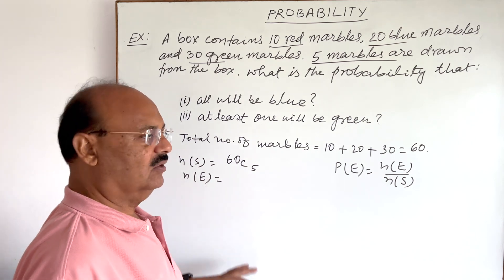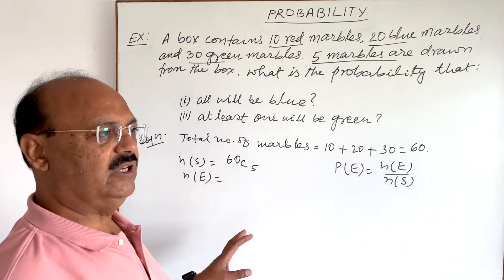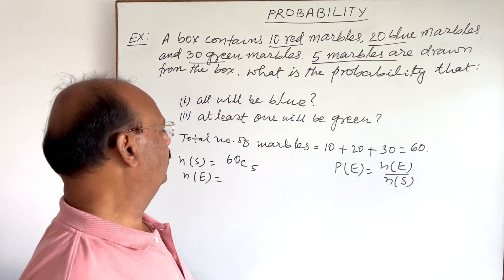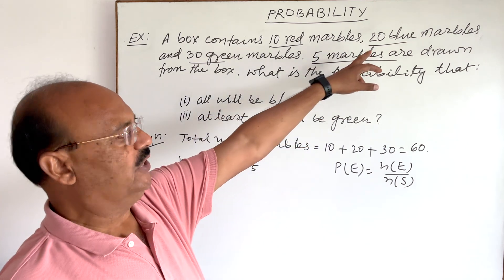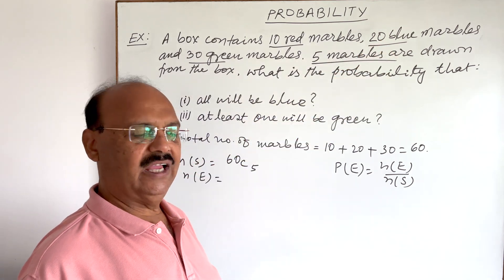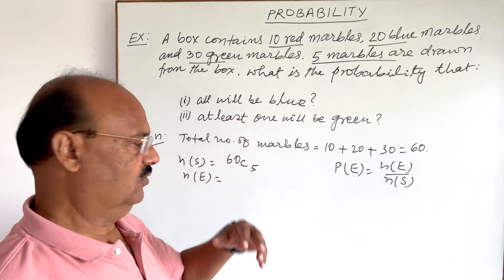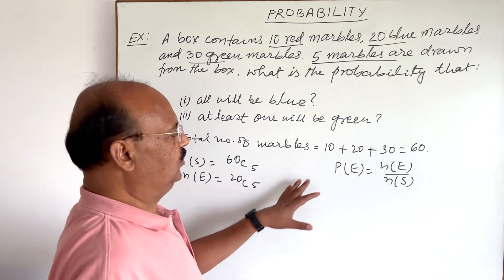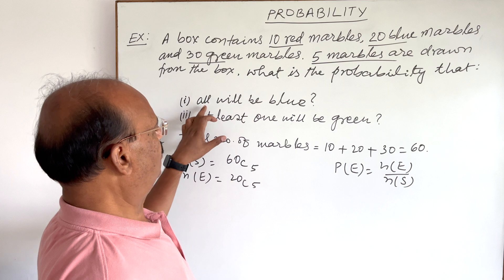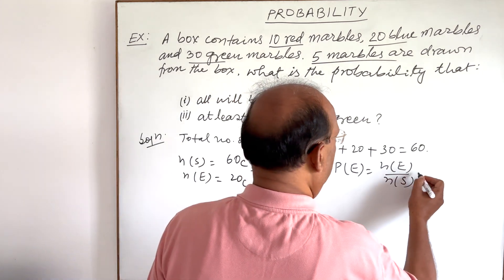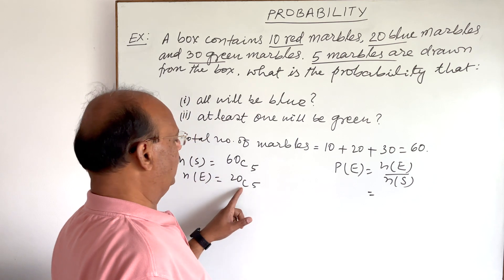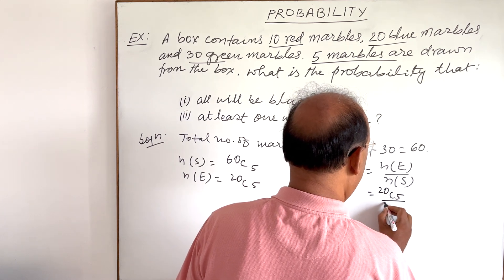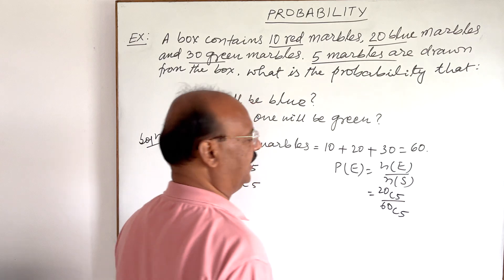NE is the number of elements in the favorable event — the desirable outcome we want. Since all five must be blue and there are 20 blue marbles, we choose all five from these 20 blue marbles, so NE will be 20C5. Using the formula, the probability that all will be blue is 20C5 divided by 60C5.